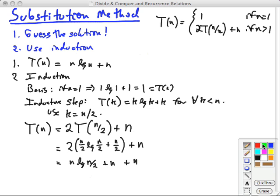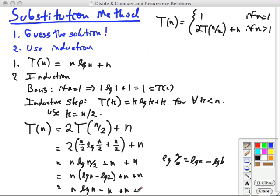Now, remember the formula that if you have log of a over b division, that's equal to the log of a minus log of b. So we're going to apply that here to break this term up into n times log n minus log 2 plus n plus n. Well, log base 2 of 2, what number do you raise 2 to get 2? That's just 1, so this becomes n log n minus n plus n plus n.